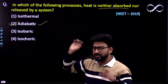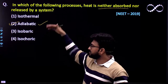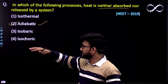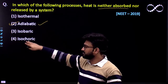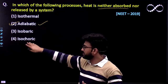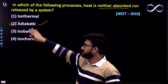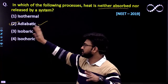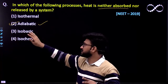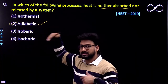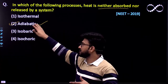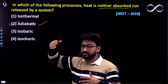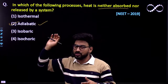You need to remember all the different processes: isothermal, adiabatic, isobaric, and isochoric. Isochoric means volume remains constant. Isobaric means pressure remains constant. Adiabatic means no energy has been supplied from the external surroundings. Isothermal means the temperature remains constant throughout the process.